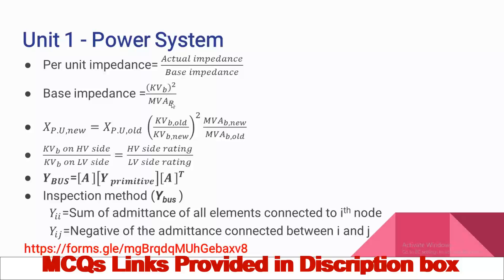These are new values. This calculation is required for the transmission line when the actual impedance value is given. The base impedance of the transmission line can be calculated using this formula. The change of base formula is: X per unit new equals X per unit old multiplied by (kV-base old divided by kV-base new) squared, multiplied by (MVA-base new divided by MVA-base old).